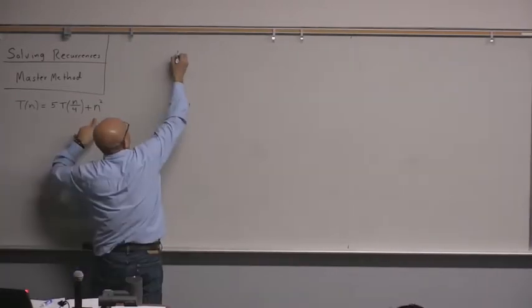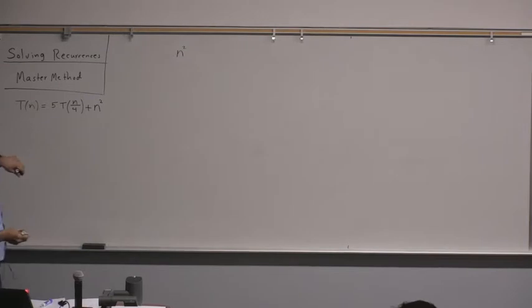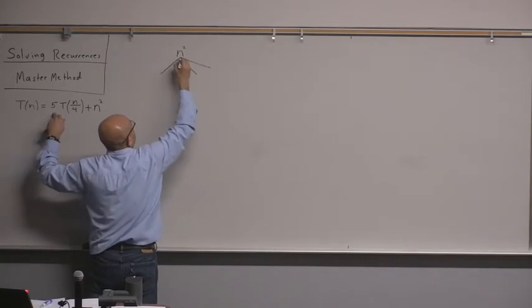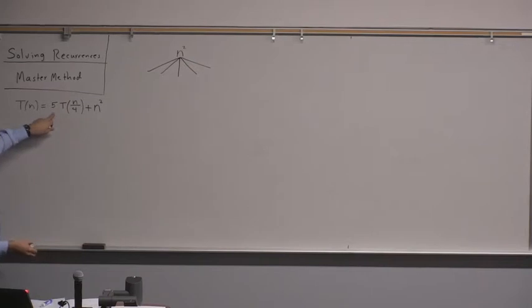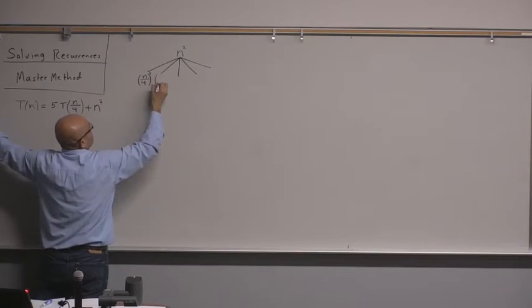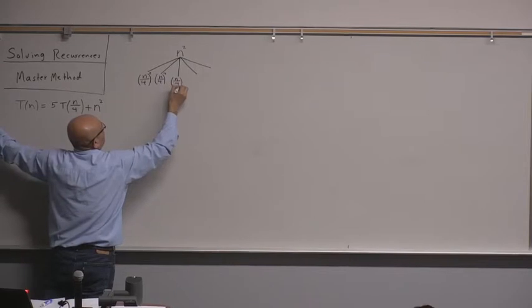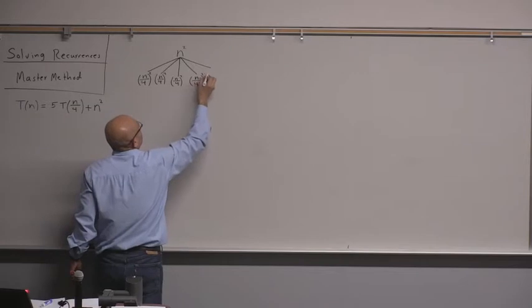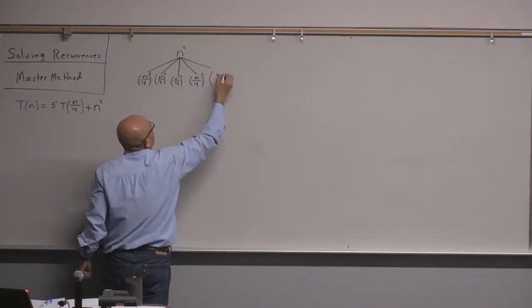We start with n² at level 0. Now how many branches? Five branches. Each branch is n/4 squared, so we have five nodes each with value (n/4)².